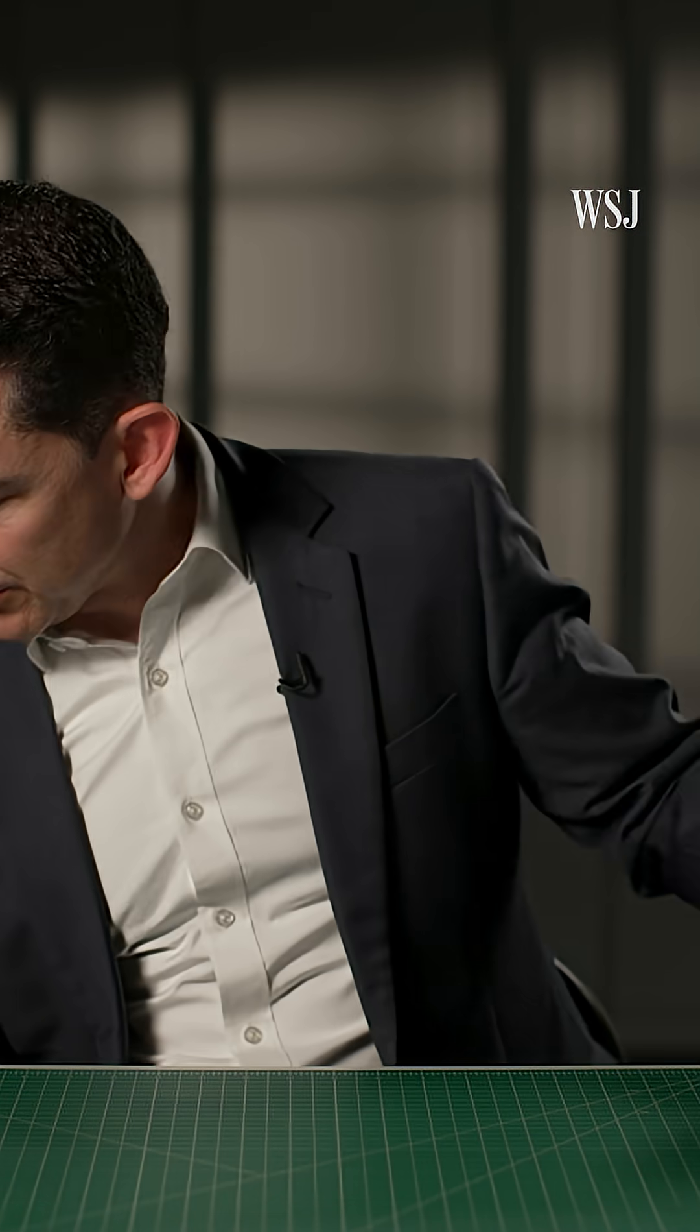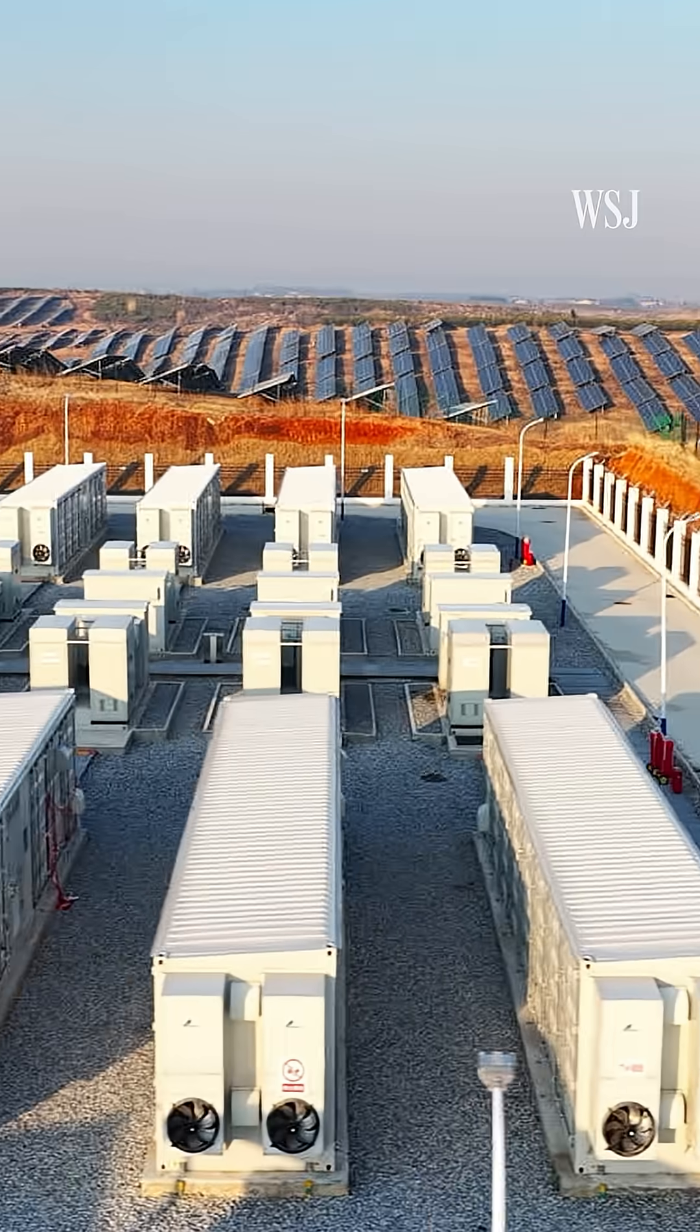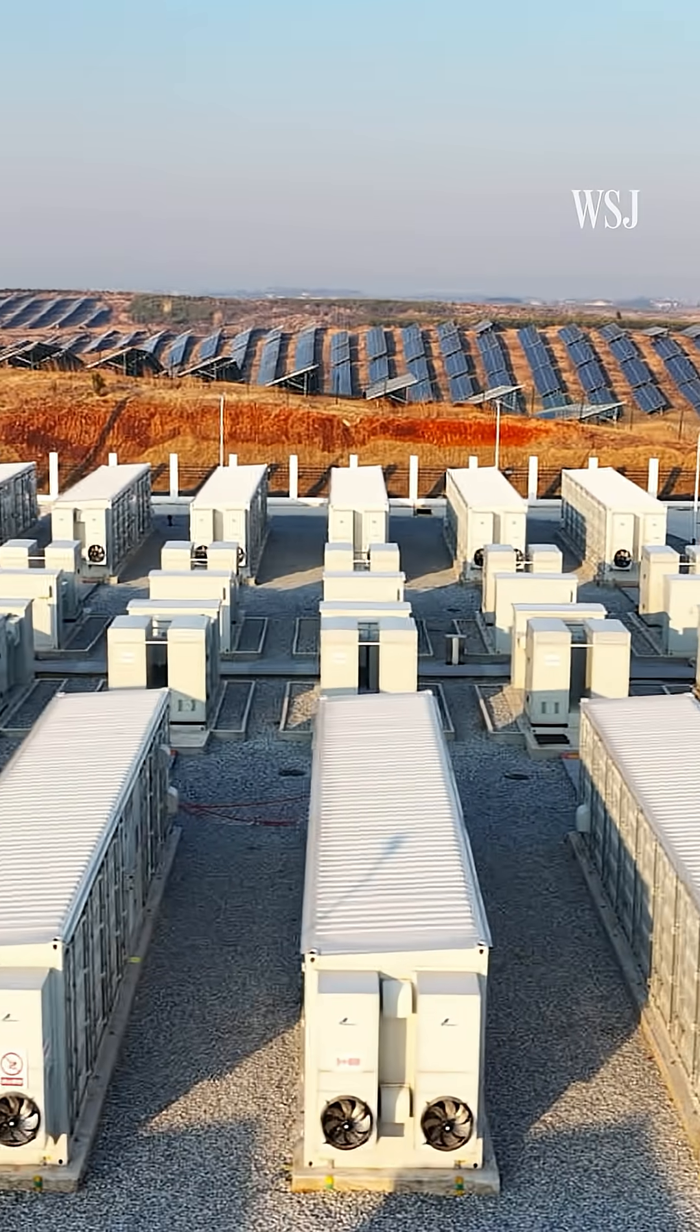Our third opportunity to improve the resilience of the grid would be to have backup power supply, what we call battery energy storage systems or BESS. If there's an unexpected outage, batteries can deploy excess energy to stabilize the grid.